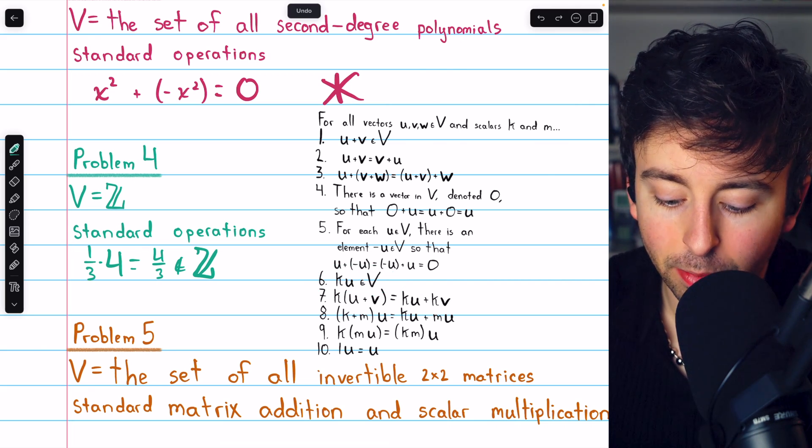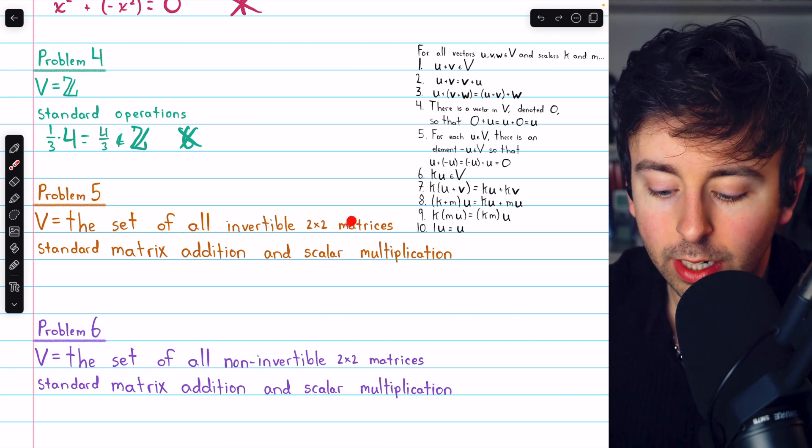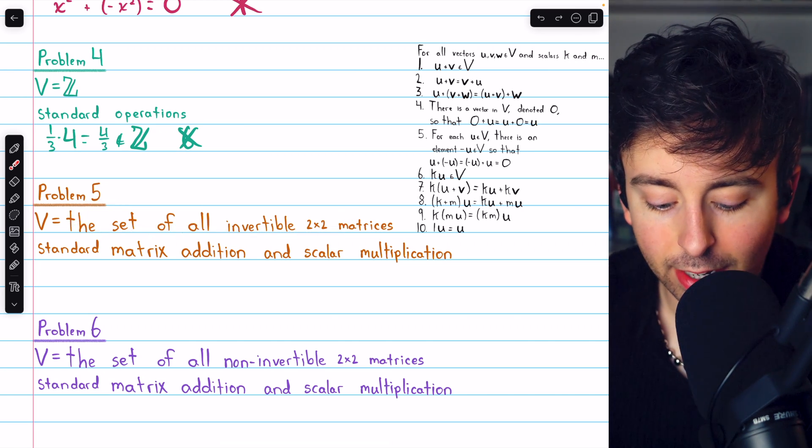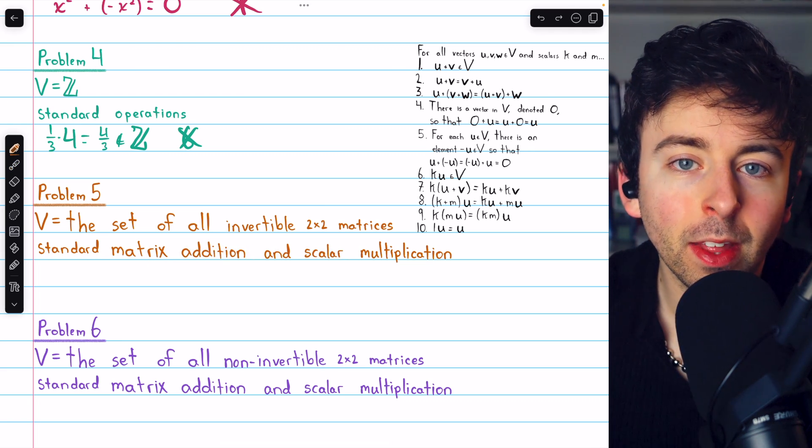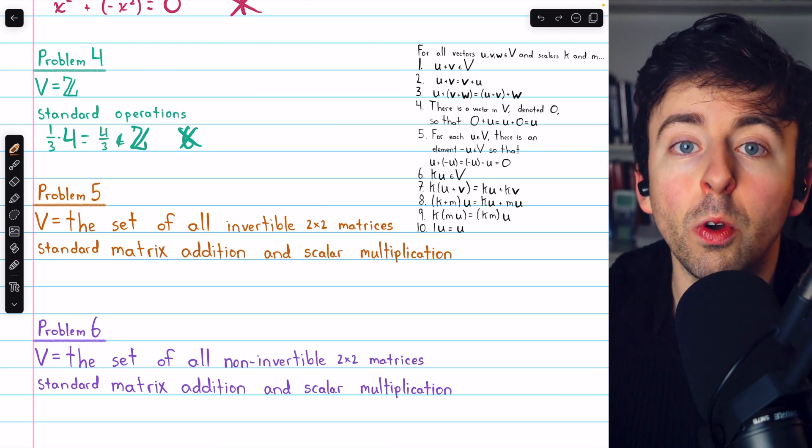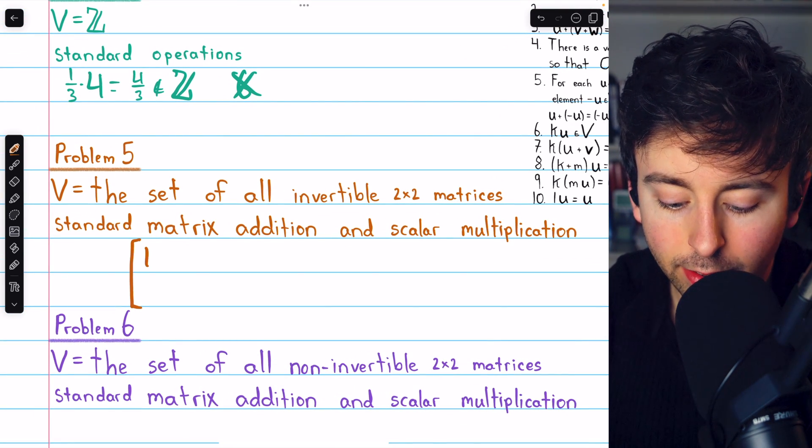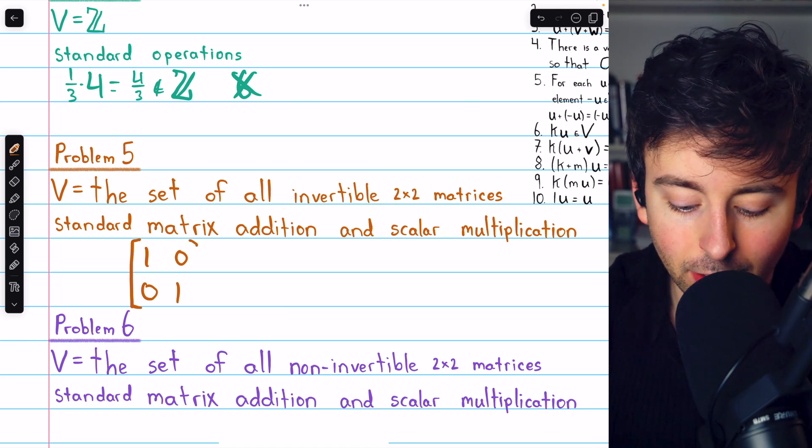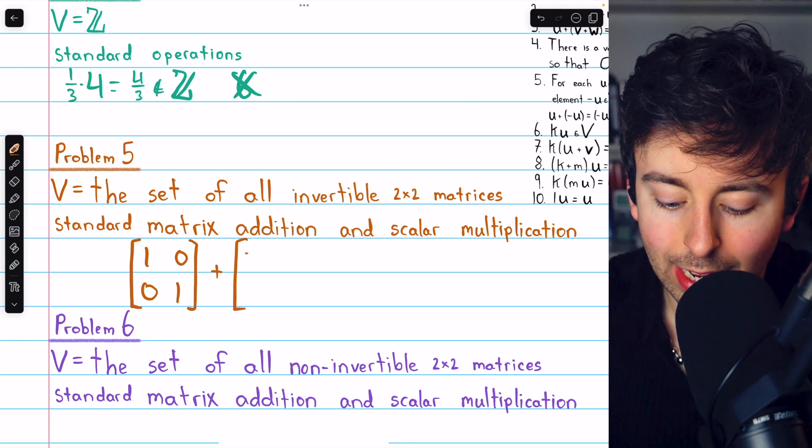In problem 5, our set is the set of all invertible 2x2 matrices with standard matrix addition and scalar multiplication. In this case, we don't have closure, for example, because if we take the identity matrix, which is certainly invertible—it is, in fact, its own inverse—we could add the identity to its negative,